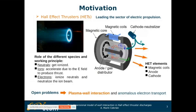Hall effect thrusters are mainly composed of an annular chamber with magnetic coils and an annular cathode. The magnetic coils generate a magnetic field inside the chamber, and the potential difference between the anode and the cathode generates an electric field. The neutrals are injected from the anode backplate and get ionized within the chamber. When they get ionized, they become positively charged ions, which are accelerated due to the electric field.